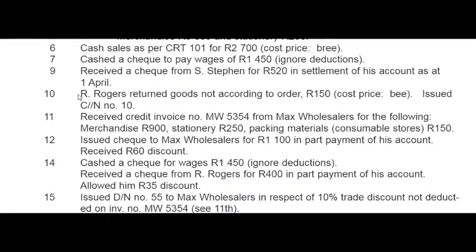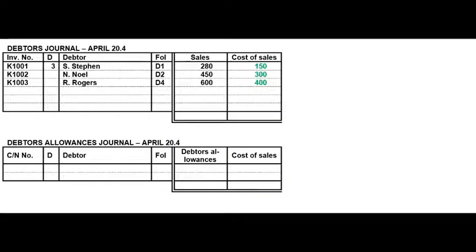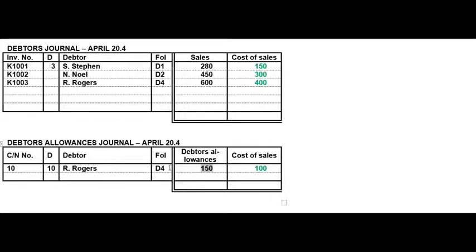On the 10th, R. Rogers returned goods not according to order for 150 rand with a cost price code, and credit note number 10 was issued. Returned goods and a credit note should indicate to you that this is a DAJ transaction. In the DAJ you say credit note number 10, R. Rogers is D4, the selling price was 150, and the cost of sales according to Black Horse is 100.